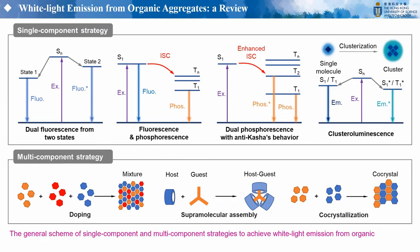In this review, we systematically summarized representative works to construct white-light emitters from organic aggregates. The single-component strategy is introduced from dual emission from two luminescent states — fluorescence and phosphorescence — dual phosphorescence with anti-Kasha behavior, and exciplex luminescence.